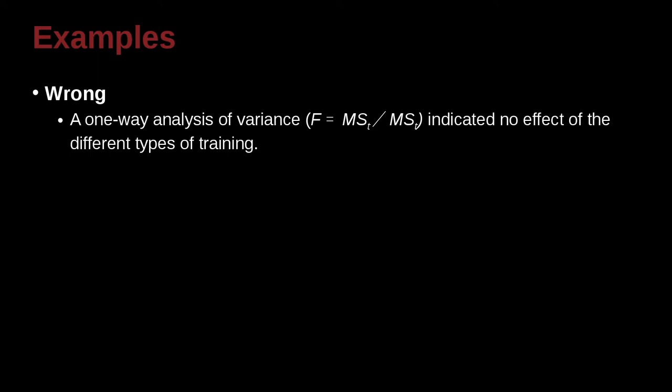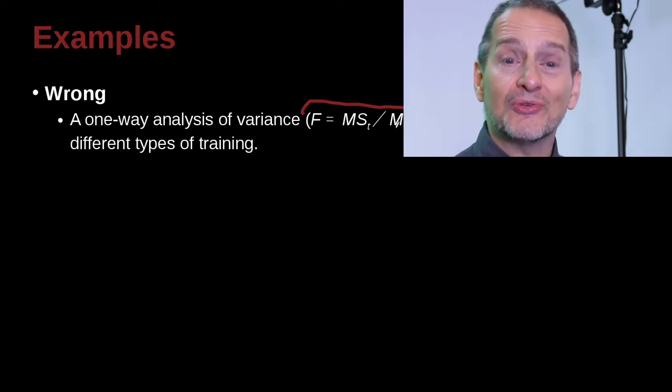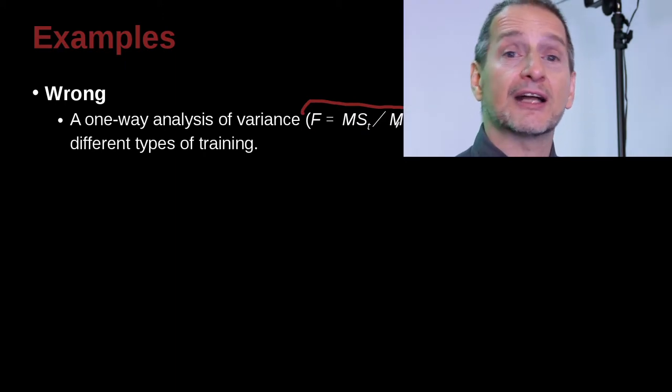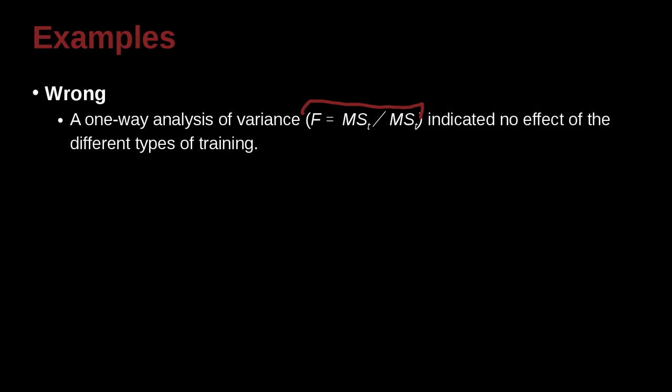The one-way analysis of variance F equals MS sub T divided by MS sub T indicated no effect of the different types of training. And of course, what we have here is why is this wrong? Because you're actually explaining what is the analysis of variance test. That's a little bit strange. You don't need to tell how the test is conducted or what the formula for the test is if it's a common test, which in this case it very much is.